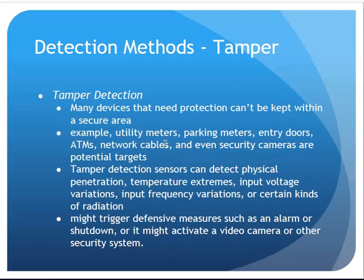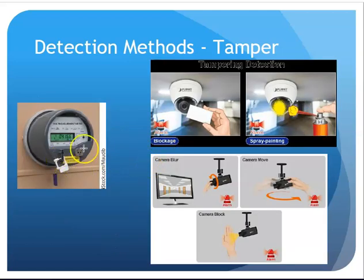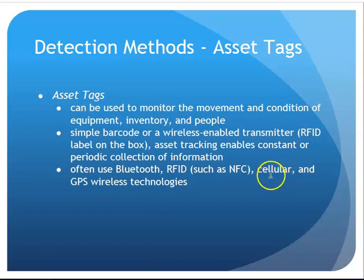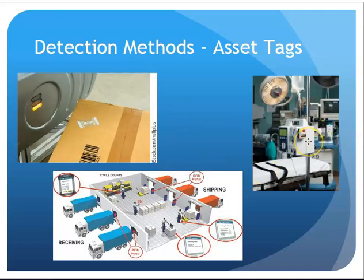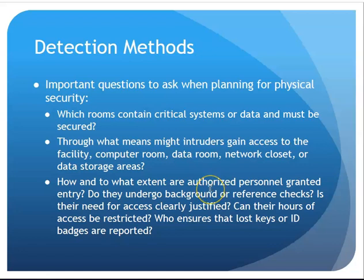Tamper detection — you might have tags or special security screws on devices that people are not able to tamper with, steal, or take. If somebody has monkeyed with it, it would be obvious that a tag is gone. There are even cameras that respond to somebody trying to spray paint over them. You might also have asset tags that you literally put on devices to maintain where they are — as simple as in a hospital knowing where a piece of equipment is, or in a loading dock tracking a product as it moves from truck to truck. These detection methods are all part of your physical security in a building.